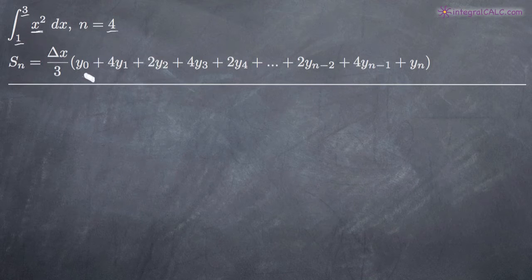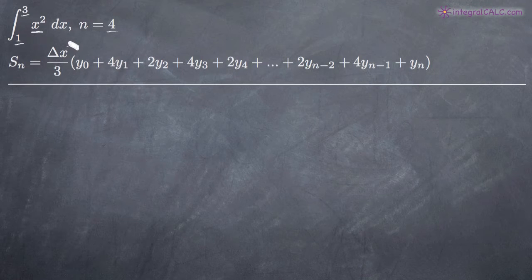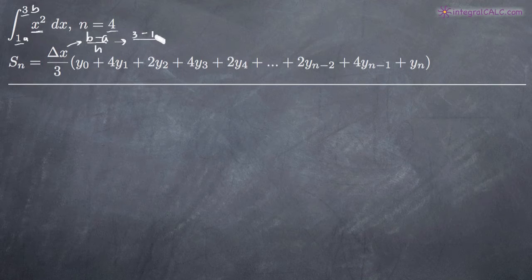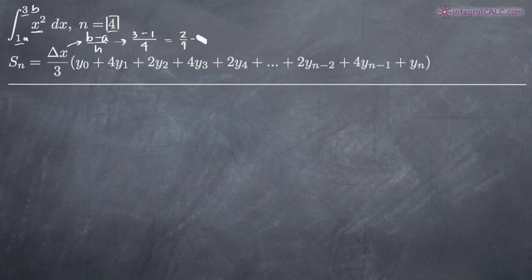Now we need to find all of the values in the Simpson's approximation formula so we can plug them in. The first one is delta x. To find delta x, we use delta x equals b minus a divided by n. Plugging in 3 for b and 1 for a, we get 3 minus 1 divided by 4, which gives us 2 over 4, or 1 half. So we'll be plugging in 1 half for delta x into our Simpson's approximation formula.